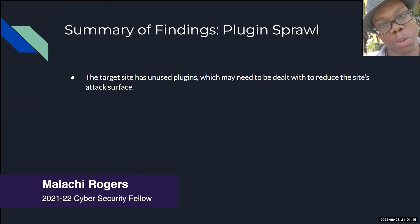Something else that TK Cyber Solutions found during their penetration test was that the target site has a number of unused plugins. The issues that result from this are that the more unused plugins or unused resources you have, it drastically increases your attack surface. This makes it easier for attackers to gain access to your site because there are plugins you don't even remember having, that you haven't secured.